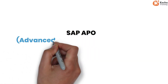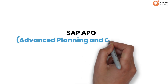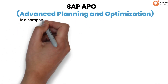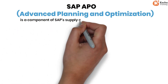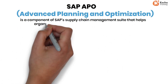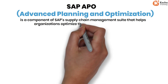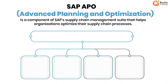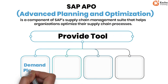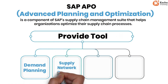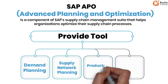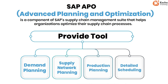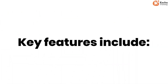SAP APO, Advanced Planning and Optimization, is a component of the SAP Supply Chain Management suite that helps organizations optimize their supply chain processes. It provides tools for demand planning, supply network planning, production planning, and detailed scheduling.